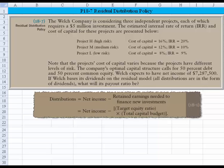Hi, everyone. Let's look at problem 18-7, which is a problem dealing with residual distribution policy. The Welch Company is considering three independent projects, each of which requires a $5 million investment. The estimated internal rate of return and the cost of capital for the projects appear in the schedule below. So we have a high risk, a medium risk, and a low risk project.